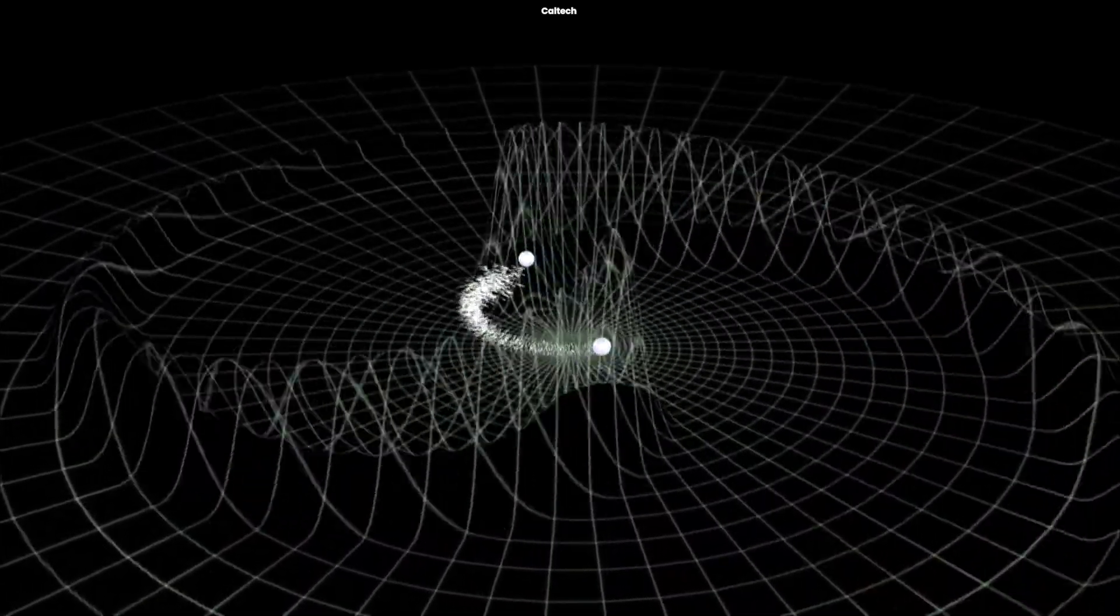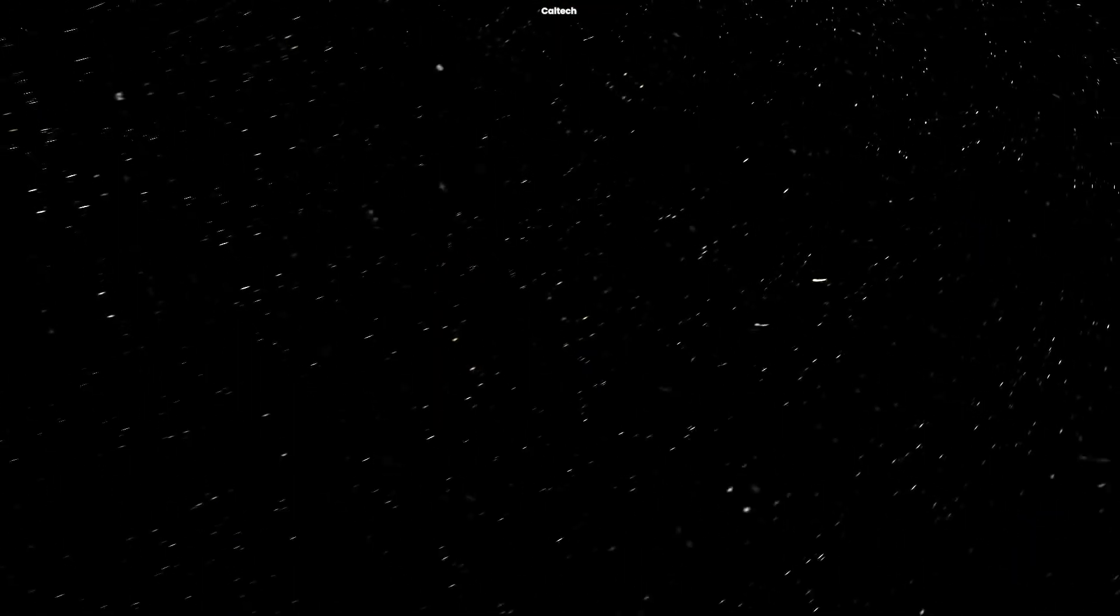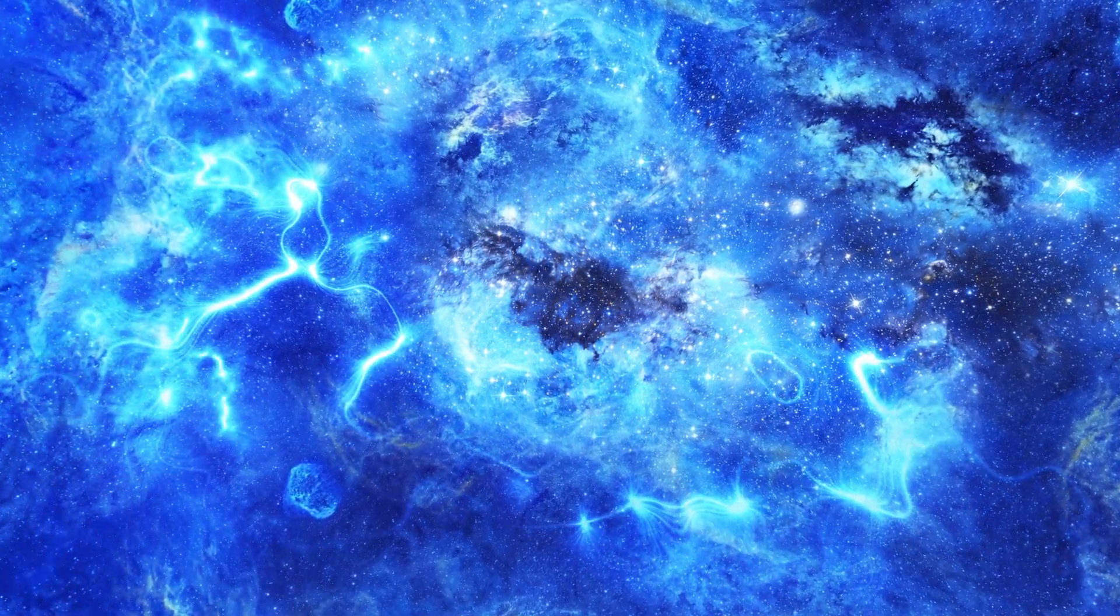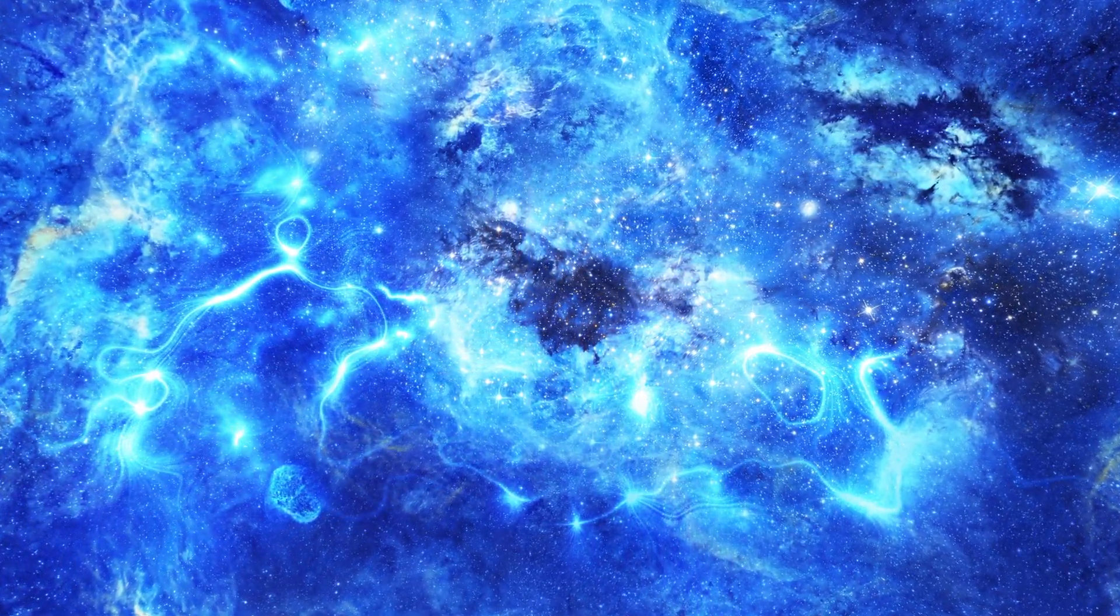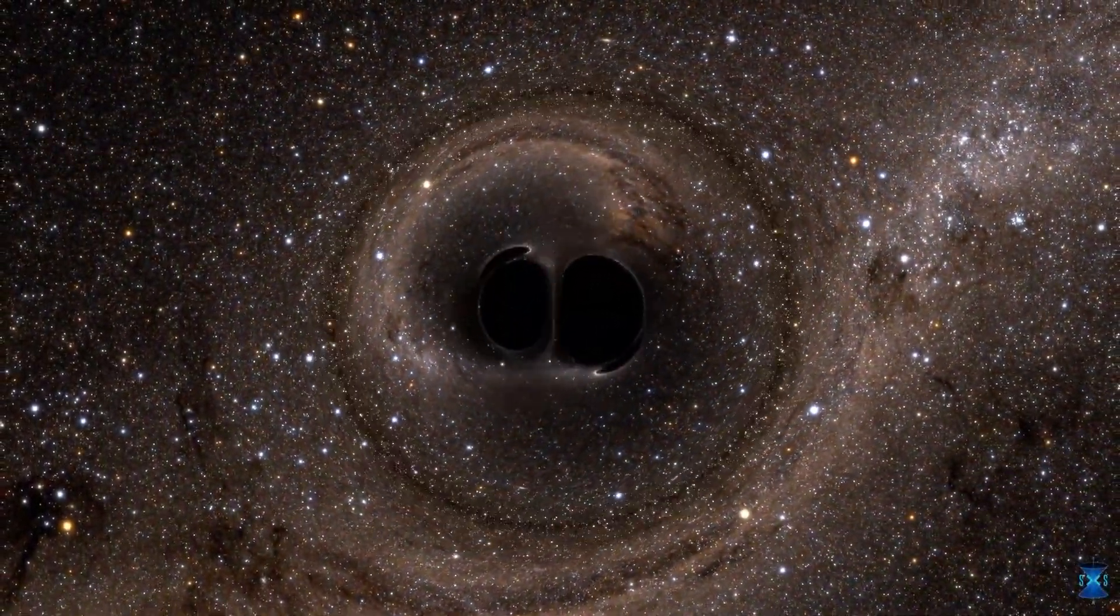Einstein's theory of general relativity was the first to predict gravitational waves. The theory describes these waves as disturbances in the curvature of spacetime. Such disturbances come from the most violent and energetic events in the universe, including the collision of neutron stars or black holes.